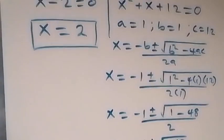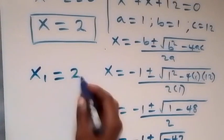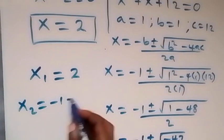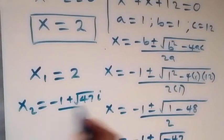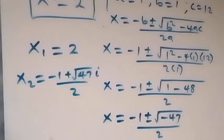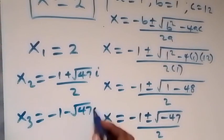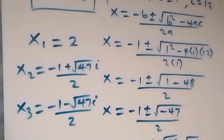Altogether we have three solutions: x₁ equals 2, x₂ equals minus 1 plus root of 47i over 2, and x₃ equals minus 1 minus root of 47i over 2. So we have one real solution and two complex solutions.